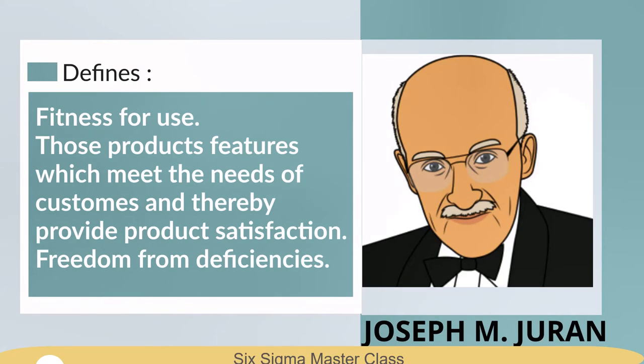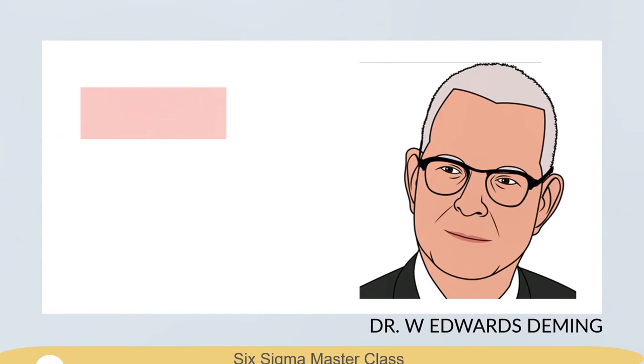Joseph M. Juran, one of the most critical quality gurus, defined quality as fitness for use. Those products' features will meet the needs of customers, and thereby provide product satisfaction and freedom from deficiencies.